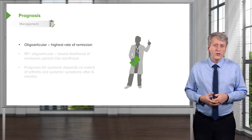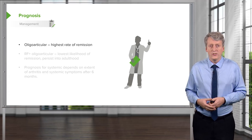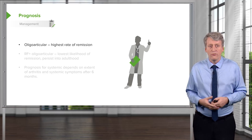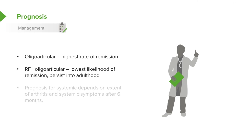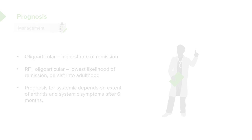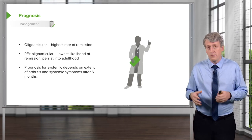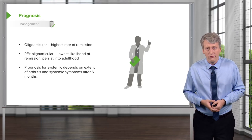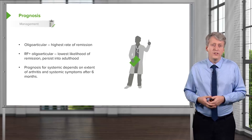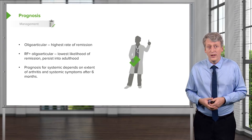In terms of prognosis, oligoarticular JIA probably has the best prognosis and oftentimes these children will achieve a state of remission. Rheumatoid factor positive polyarticular JIA has the lowest likelihood of remission and can persist into adulthood as other varieties of arthritis. The prognosis for systemic JIA depends on the extent of the arthritis and the systemic symptoms after six months of therapy — some children get all the way better, while others can progress to other types of arthritis and problems later in life. That's all on juvenile idiopathic arthritis.